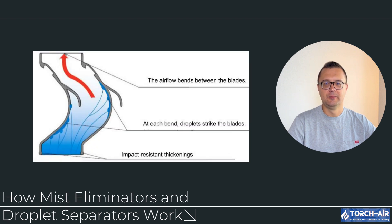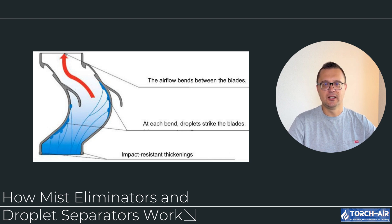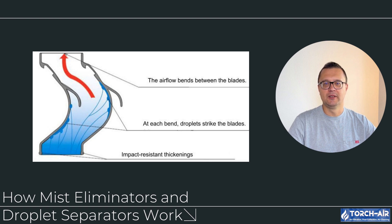How do mist eliminators and droplet separators work? They work by using various mechanisms to capture and coalesce fine droplets from the gas stream. The captured droplets then grow larger, becoming heavy enough to drop out of the airflow and be collected for removal.